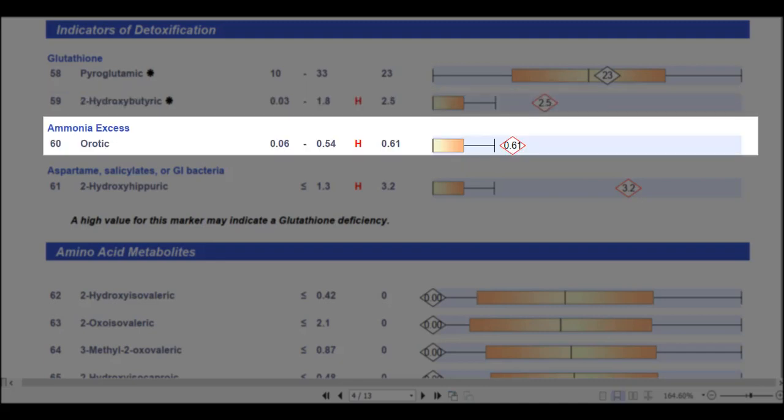Orotic acid, so elevations of this marker are usually caused by excess levels of ammonia, which can result from drug toxicity of the liver, a viral infection of the liver, kidney problems, bacterial dysbiosis, gastrointestinal bleeding, or inborn errors of ammonia metabolism.